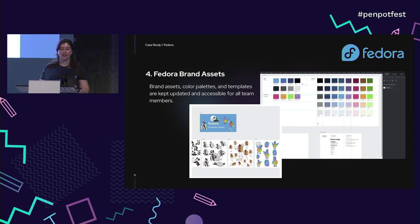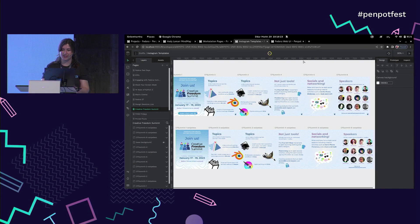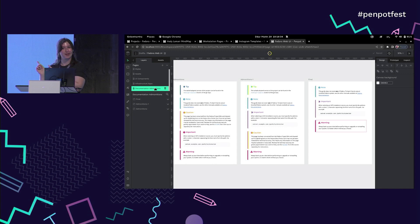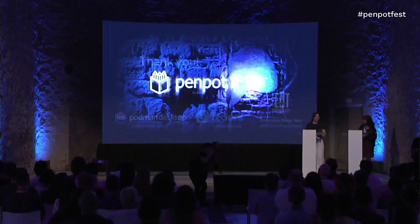Last but not least, we have the Fedora brand assets. Kind of like Penpot itself — we have the color palettes, the logo, the guidelines. We have our character library, which is one of my favorite things. If you saw any cartoon characters in the slides, it's because we have a brand and an asset library. It took me about five seconds to take them from Penpot into this presentation. They're all transparent, ready for whatever I need. It's great when someone new is joining the team and doesn't know what makes up a Fedora guideline or brand color — this is where you can send them.